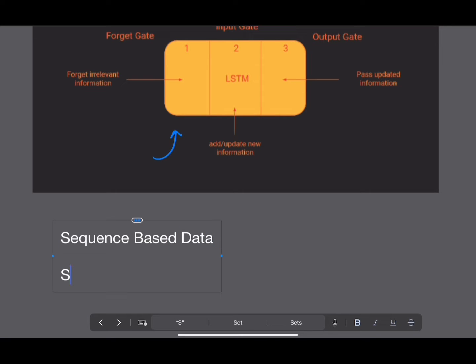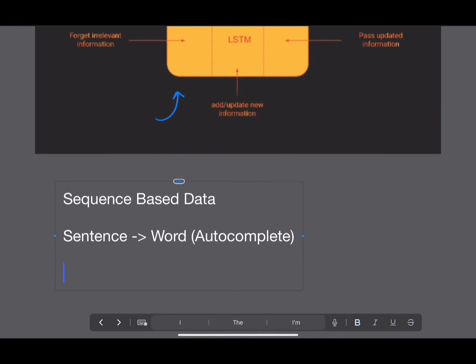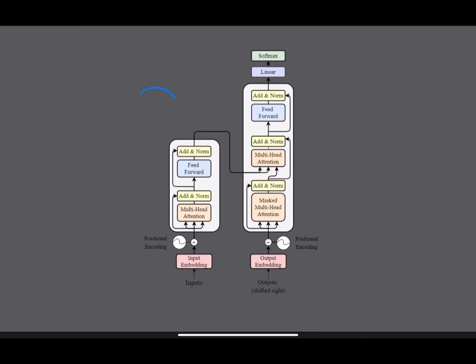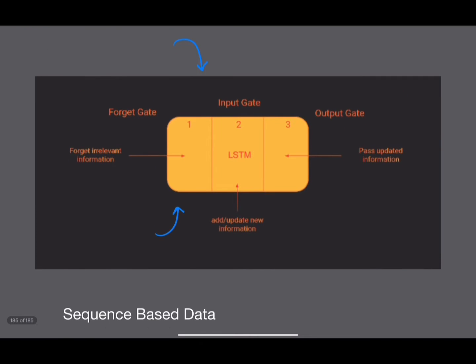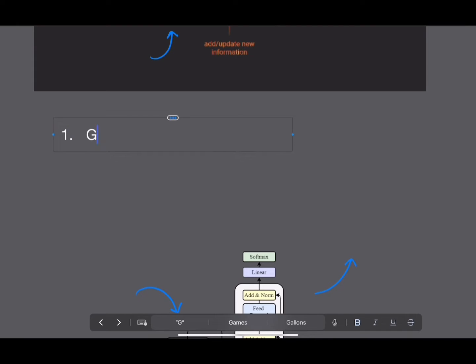LSTMs are used to make predictions on sequence-based data. This might be a sentence where we want to predict the next word, kind of like an autocomplete model. Or we might pass in stock prices from different days and want to predict a future price. The transformer neural network, which has a whole playlist, is actually used more commonly these days.